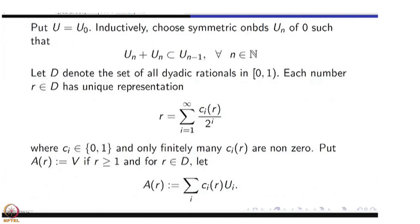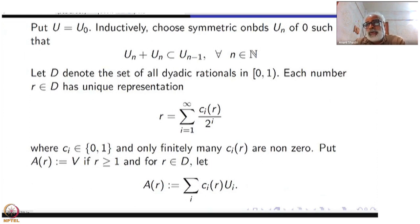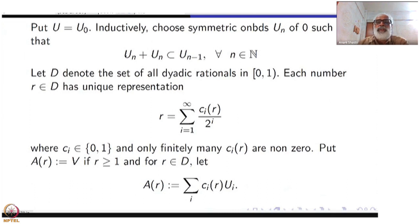Somewhat like in Urysohn's lemma, we proceed here — but it is easier. Start with U_0 = U. Inductively choose symmetric open neighborhoods U_n of 0 such that U_n + U_n ⊆ U_{n-1}. Here symmetric means U_n = -U_n, so U_n + U_n or U_n - U_n is the same thing. We apply this for every n: start with U_0, take U_1 with U_1 + U_1 ⊆ U_0, and keep going.